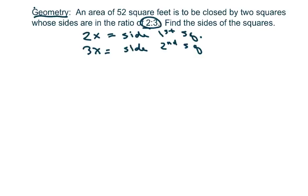So we're going to get 2x squared plus 3x squared equals 52, and then we're going to square this out and we get 4x squared plus 9x squared.